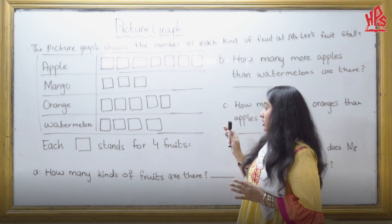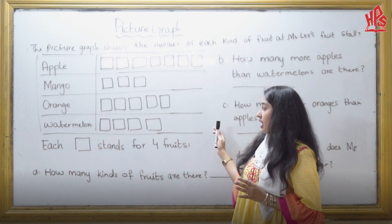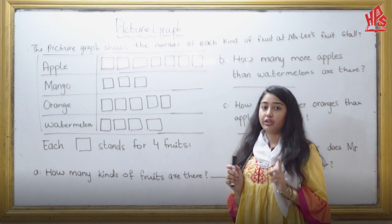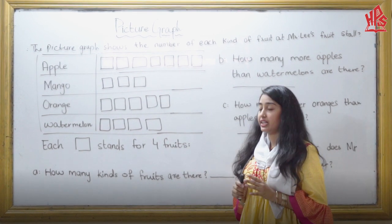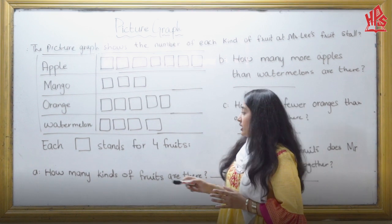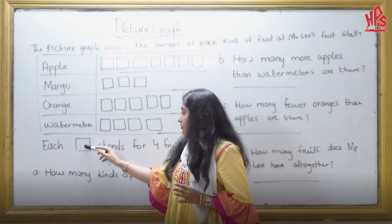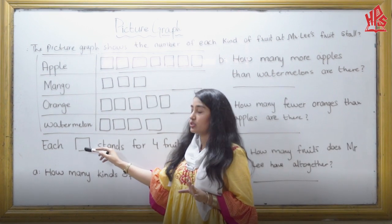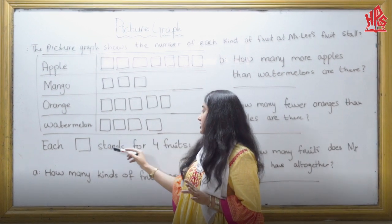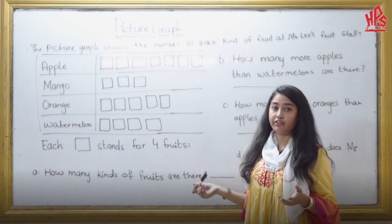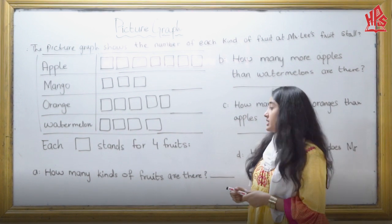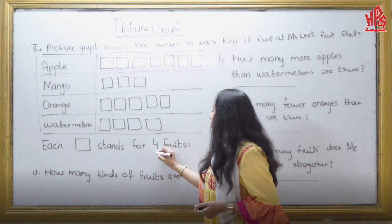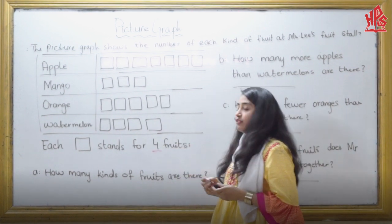Before starting this picture graph, you have to keep one thing in your mind: each picture — for example, I have a square over here — so this square stands for how many fruits? It stands for 4 fruits.